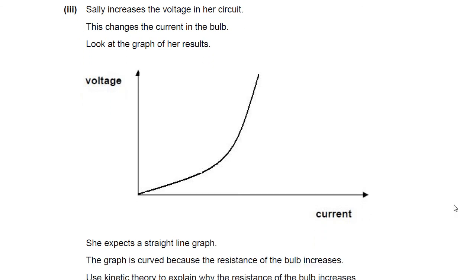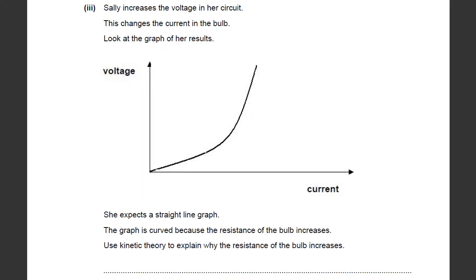Sally then increases the voltage in her circuit, which changes the current in the bulb. Look at the graph of her results. This graph is a pretty typical graph you'd expect for a filament bulb, and understanding it is key in talking about resistances. We've got two main sections. This section here is where the resistance is low — remember R = V/I, so here you've got a low V and a high I, therefore R is low.